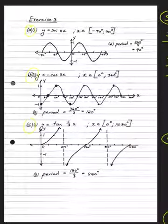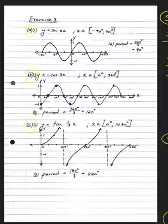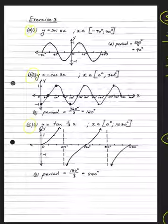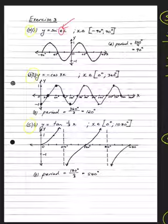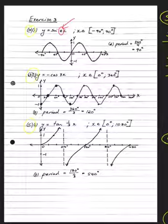Alright Grade 11s, looking at Exercise 3 on page 154 of your Mind Action Series book. They've asked you to sketch the following graphs and write down the period of the function. We are working with the period shift. The way we know a period shift has happened is that there is a number in front of the x in our function, and that means the period is no longer 360 degrees for sine. We've changed it from 360 to 90 by dividing by four — whatever is the coefficient of that angle, you divide it into your original period.